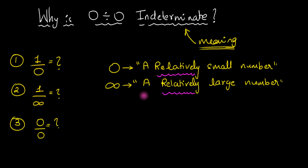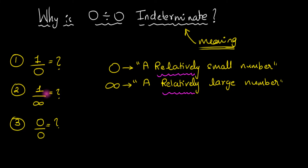Similarly, in one divided by infinity, think of infinity as a number much bigger than one. Whatever finite number we use as our reference — whether we're dividing by zero or by infinity — that number is our reference. With respect to that, imagine them to be either relatively small or relatively large.